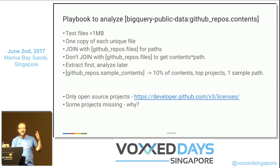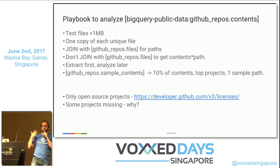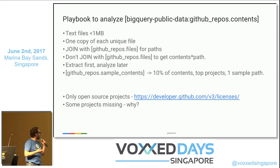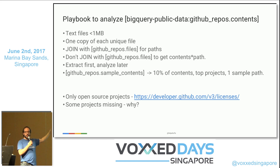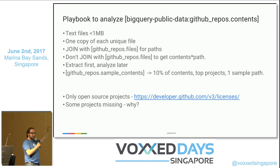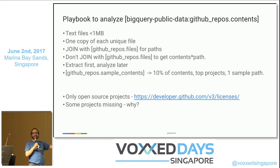A few things to remember when analyzing this dataset: you'll find only contents for text files — binary files aren't copied. Each file has one unique copy; you can join with the files table to see all paths. But try not to do a full join to get everything, because you'll end up with 49 terabytes of code. If you're going to run an analysis, first extract just the files you want — all the Java files, all the PHP files — and then run your analysis.